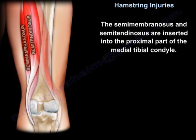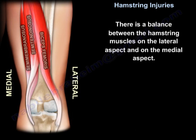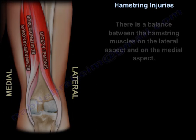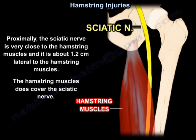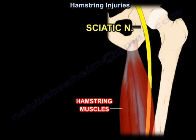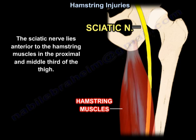The semimembranosus and semitendinosus are inserted into the proximal part of the medial tibial condyle. There is a balance between the hamstring muscles on the lateral and medial aspects. The sciatic nerve is approximately 1.2 cm lateral to the hamstring muscles, and the hamstring muscles cover the sciatic nerve. The sciatic nerve lies anterior to the hamstring muscle in the proximal and middle part of the thigh.